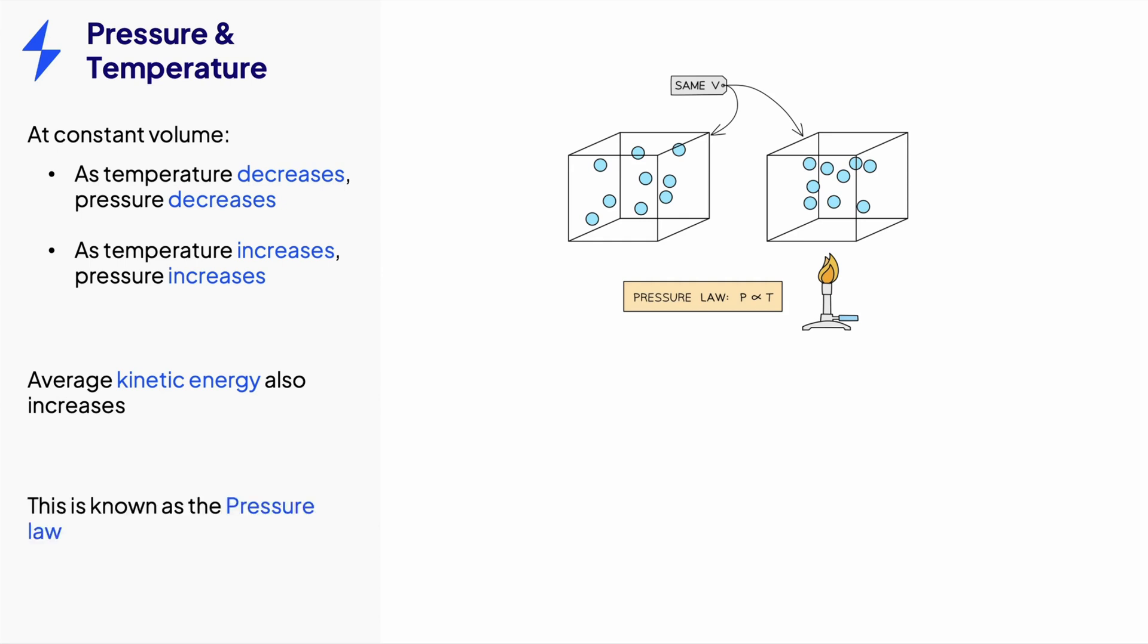This is known as the pressure law, which can be represented on a graph like this. At zero pressure, the gas will be at absolute zero, at minus 273 degrees Celsius.